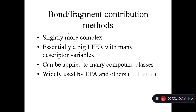The second approach we can use to estimate the physical chemical properties of organic chemicals is the bond or fragment contribution method. We started with the simplest — the linear free energy relationship — and now we're getting a little more complex. These are basically just a big linear free energy relationship: an LFER has one predictive parameter, but bond-fragment methods have many descriptor variables while still being a linear equation. You can apply these to many, but not all, compound classes. These approaches are widely used by the EPA and others, and this is mostly what EpiWin is based on.